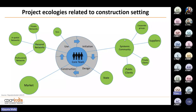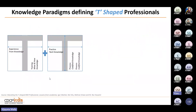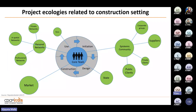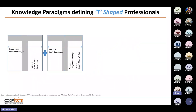In a construction setting, project ecologies include different entities at various stages. In the initiation phase you have corporate groups, statutory bodies for approvals, suppliers, private and public clients. In design, federal or state entities may provide input. In construction, market-related stakeholders contribute. During the usage phase, professional networks are involved to understand how the facility is performing after handover.